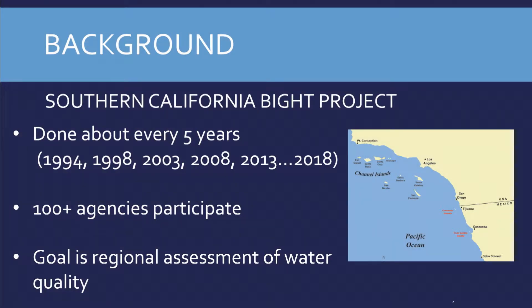I'm going to give you a little bit of background. I'm talking about using GIS and GIS tools, specifically with a large-scale regional monitoring program that we've been doing for a long time. This project started back in 1994. We basically do a comprehensive survey of the coast every five years, and I've been involved with it since 1994. There are tons of agencies that participate — they go out, take samples, collect data, and submit data to us. Most recently, we've moved into bay areas, estuaries, rivers, and streams. It's a very comprehensive project with lots of participants.